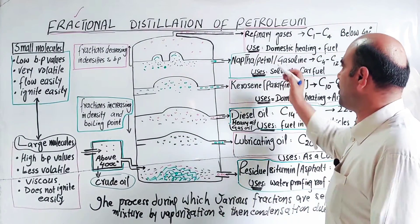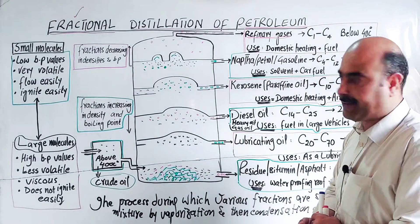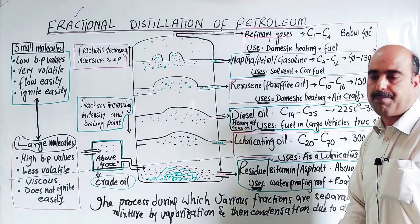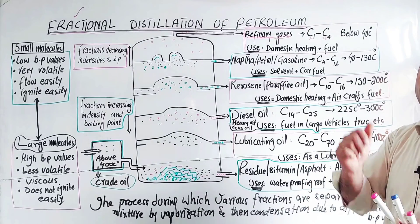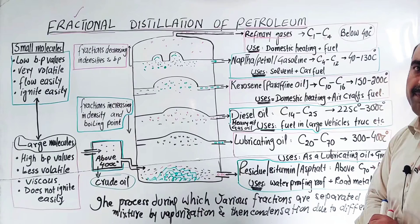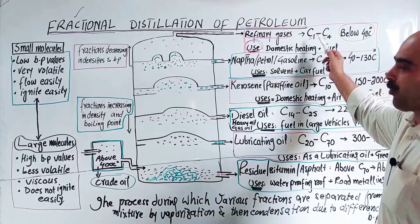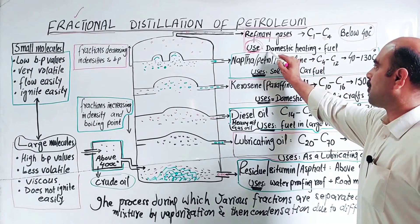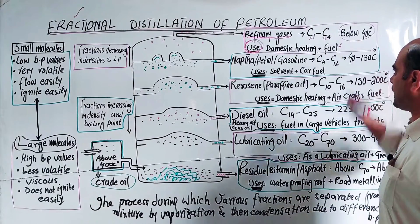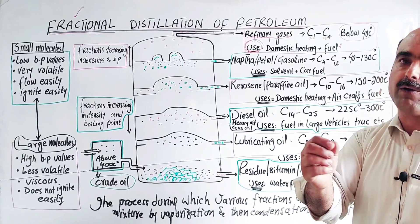The topmost fraction removed is refinery gases. During refining, gases with molecules from carbon-1 to carbon-4 are removed - carbon-1 is methane, carbon-2 is ethane, carbon-3 is propane, carbon-4 is butane. Their boiling point range is below 40 degrees. These gases are used for domestic heating, lighting, cooking, and as fuel. In liquid form it's converted to LPG, and in compressed form, it's CNG.